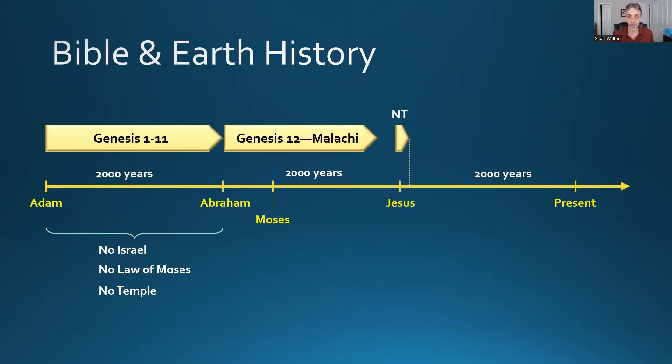There was also no cross of Christ, no gospel. No one knew about Jesus as we know about him. It's quite an interesting time — 2,000 years packed into the first few chapters of Genesis. Today I want to deal with one of the trickiest passages that people struggle with, in Genesis chapter 6.